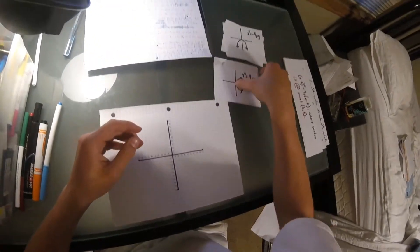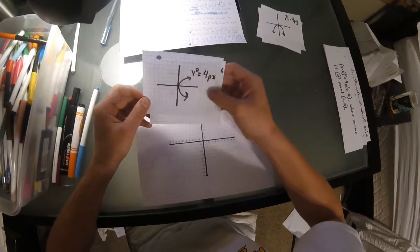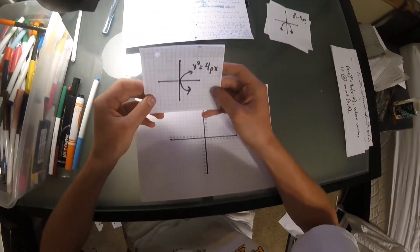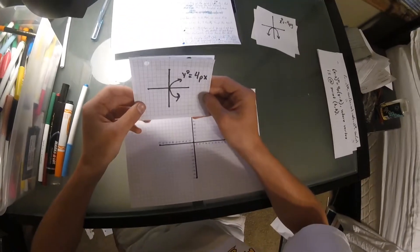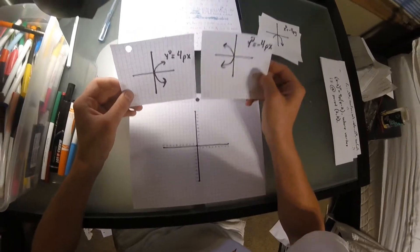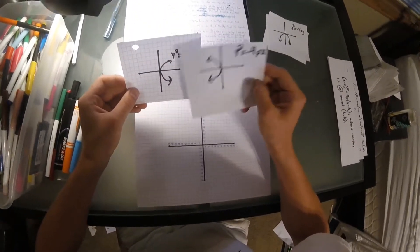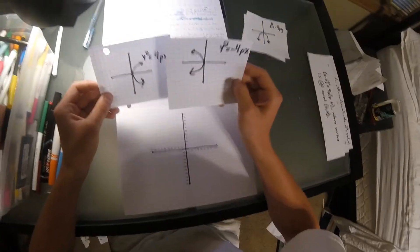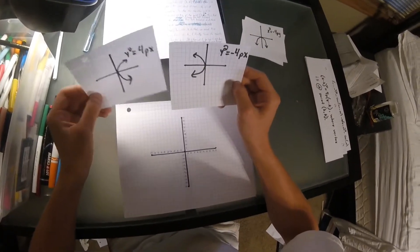Now, if a y value is being squared, the parabola will open to the left or right. This again is dependent on the p value. In this one it's positive, so it opens to the right. In this one it's negative, so it opens to the left.